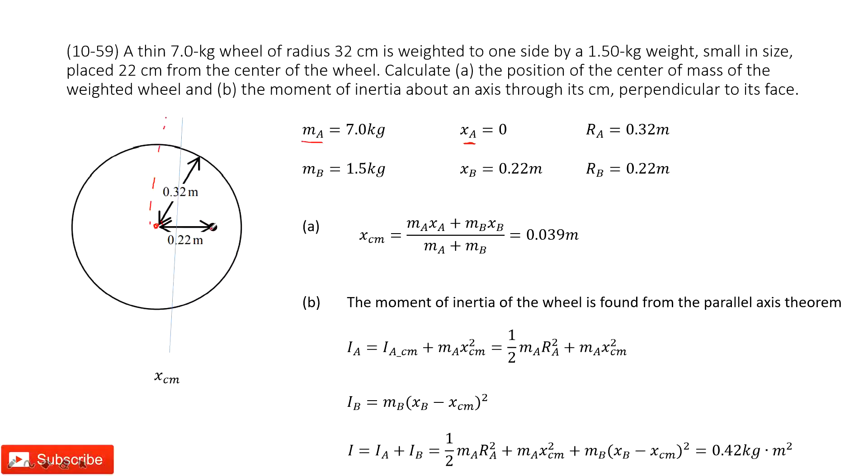And we have a point, the weight is B. And this B, the mass is given. The position is XB. It's given. And the radius for B is given.